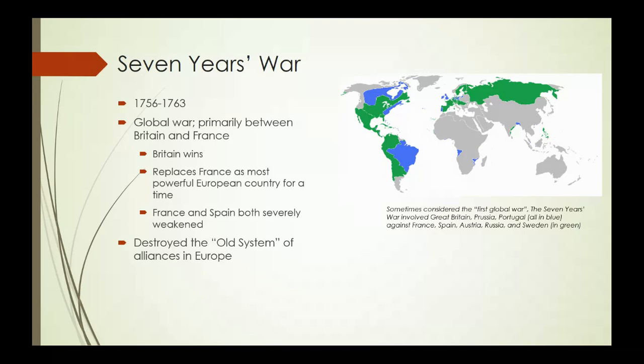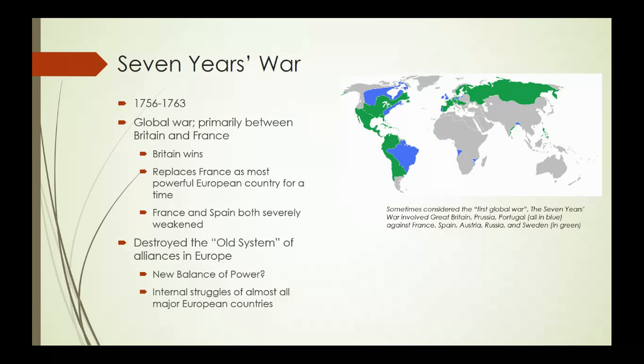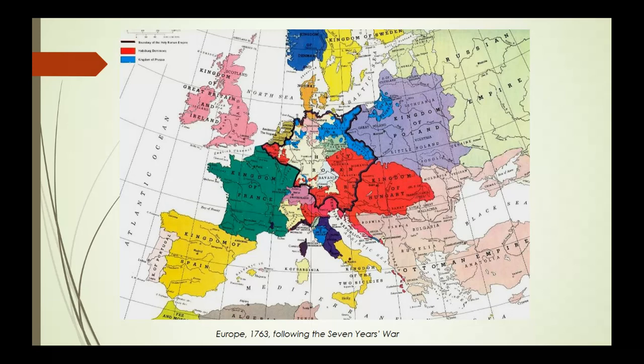The Seven Years' War is going to destroy the old system, referred to as the old system of alliances in Europe. We don't need to be too concerned about what the old system was — it gets into detail unnecessary even for AP Euro. The significance is that the destruction of the old system means there is no longer a balance of power in Europe. What we're going to see between 1763 and 1815 with the Congress of Vienna is an attempt by the great powers to figure out a new balance of power. And they're not really going to be successful until the Congress of Vienna, partly because almost all these countries are having major internal economic problems — which is really where we start our story about France and the French Revolution.